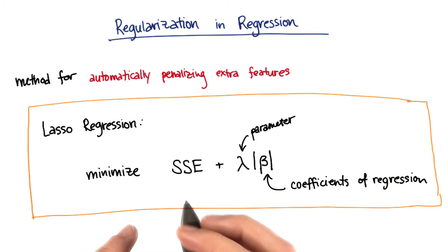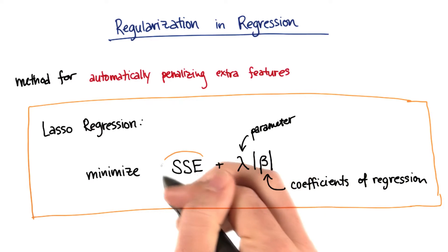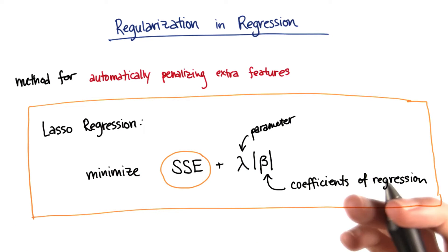A regular linear regression would say I just want to minimize the sum of the squared errors in my fit. I want to minimize the distance between my fit and any given data point, or the square of that distance.